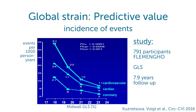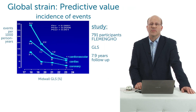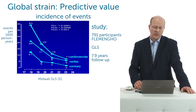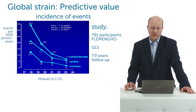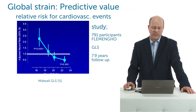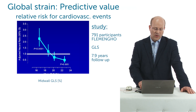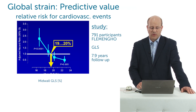We have also looked into global longitudinal strain in a huge population-based study with almost 800 participants — the Flamengo study, organized by our department in Leuven. Global longitudinal strain was measured and patients were followed up over almost eight years. The risk for cardiovascular, cardiac, and coronary events increases with decreasing strain. If you calculate the relative risk, you see that normal risk around one is exactly where we usually say the normal strain value is.